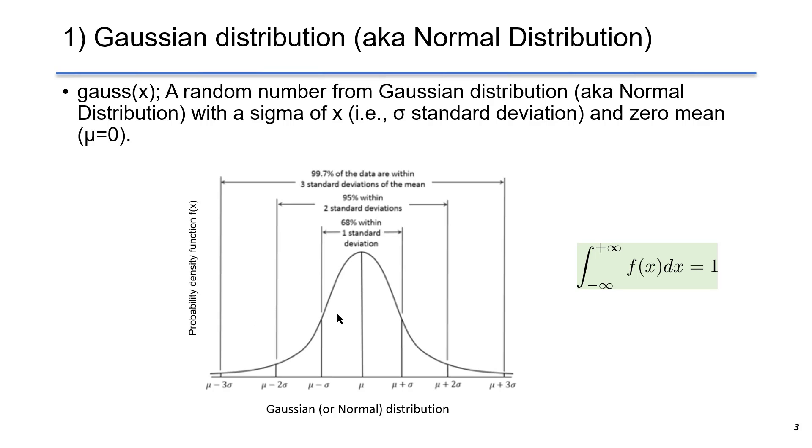Remember, the integral of the distribution density from minus infinity to plus infinity is 1. It tells you that you have 100% chance to see a number that lies in between minus infinity and plus infinity.